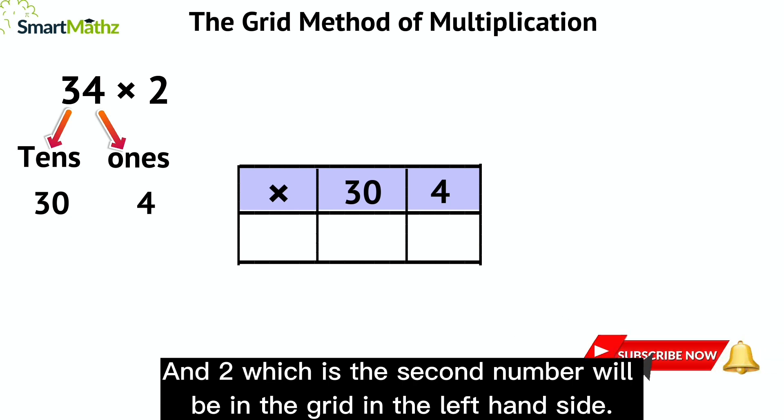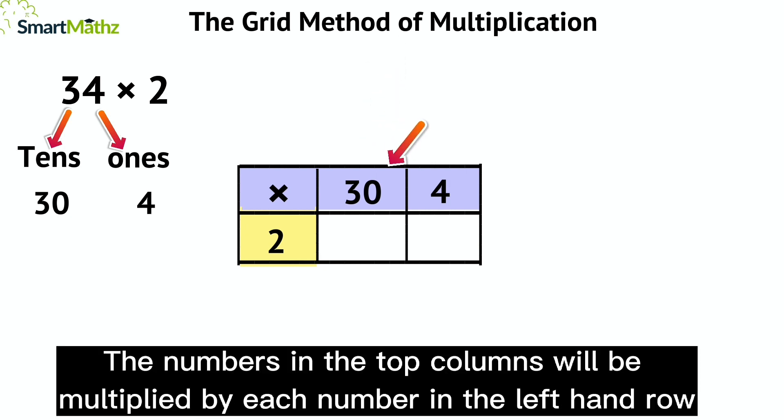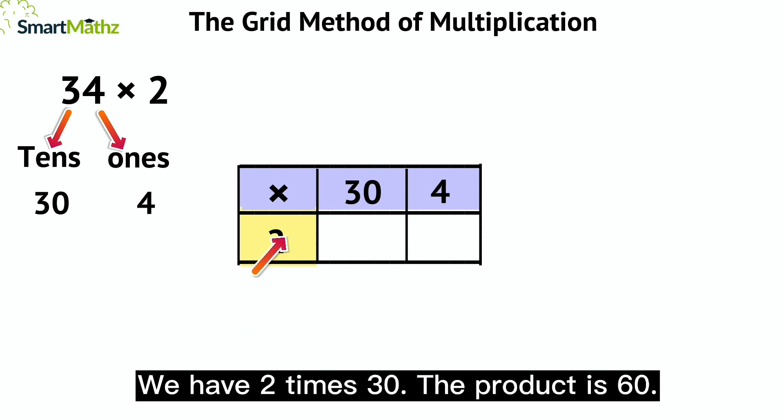Now we start multiplication. The numbers in the top columns will be multiplied by each number in the left-hand row. We have 2 times 30. The product is 60.